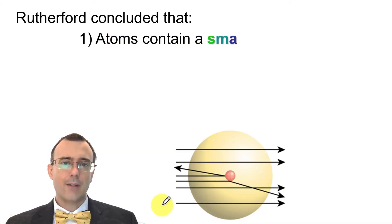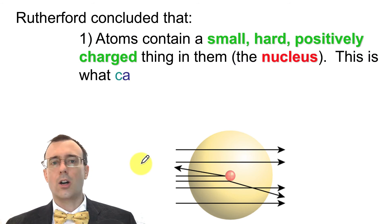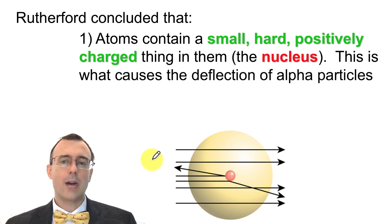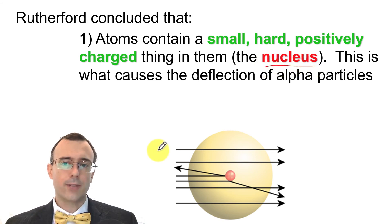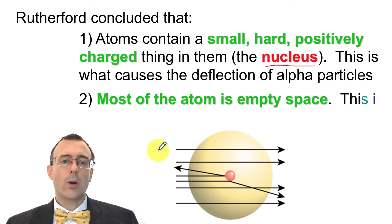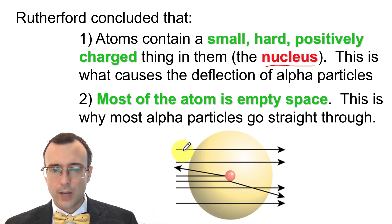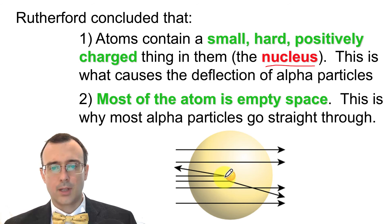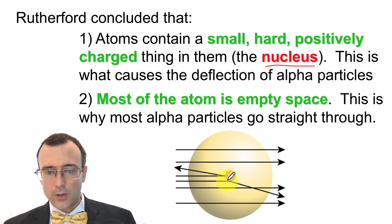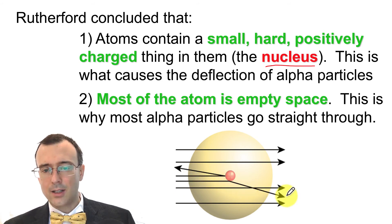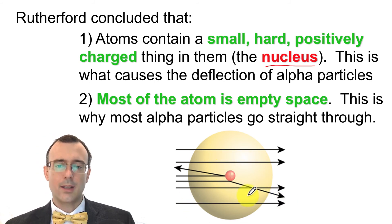He did calculations on the size of these hard particles and the size of the atom based on how many reflections he got. He concluded that atoms contain a small, hard, positively charged thing — nowadays we call that the nucleus — and that caused the deflection of the alpha particles. Because most alpha particles went straight through, the atom is mostly empty space. The alpha particle goes straight through most of the time, but when it hits the nucleus it ricochets straight back or has a glancing ricochet to the side.